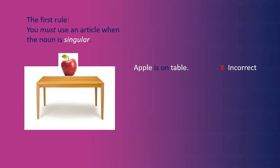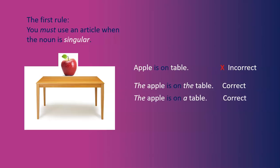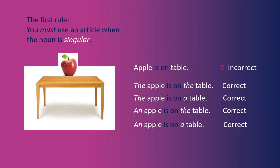The first rule: you must use an article when the noun is singular. For example, 'Apple is on table' is incorrect. You can say 'The apple is on the table,' or 'The apple is on a table,' or 'An apple is on the table,' or 'An apple is on a table.' All of those are correct.